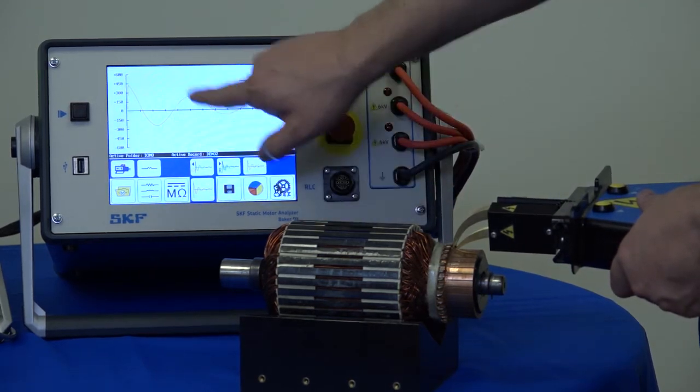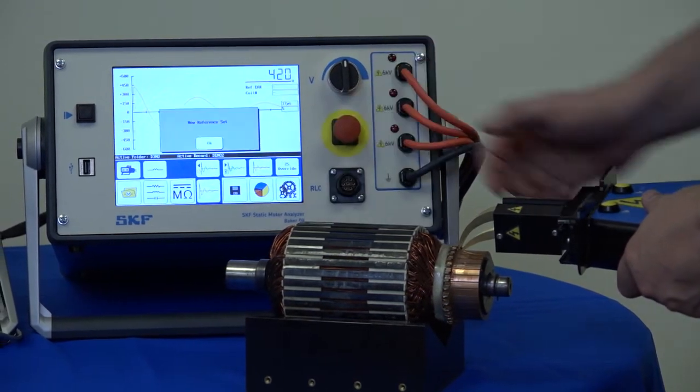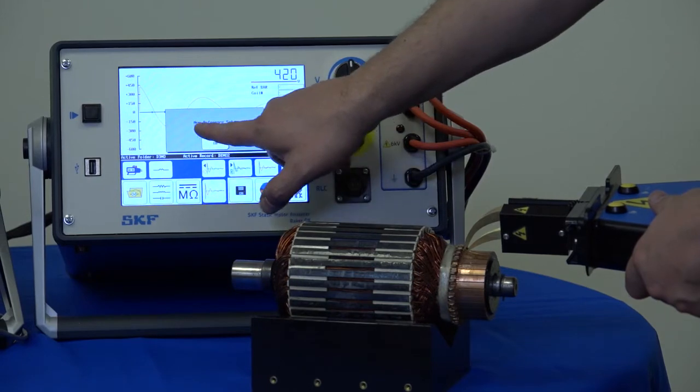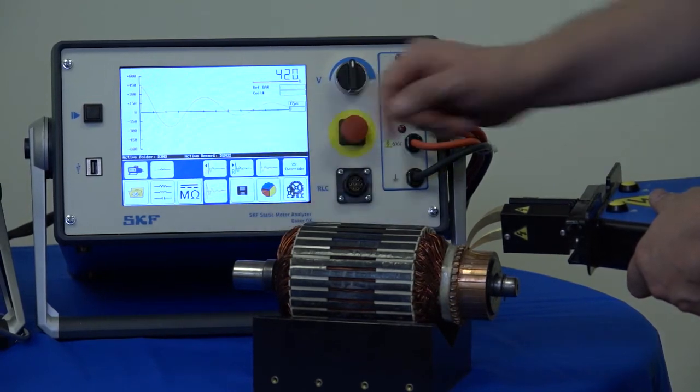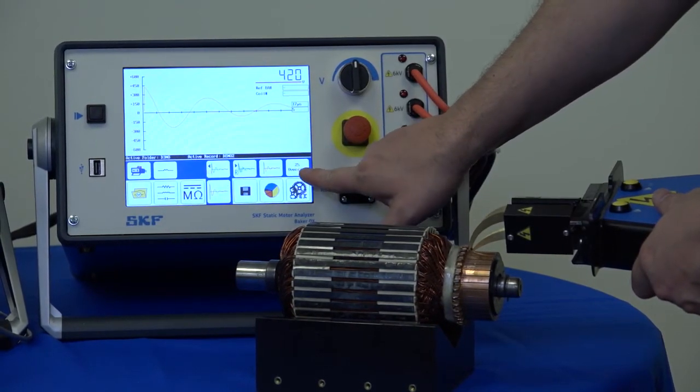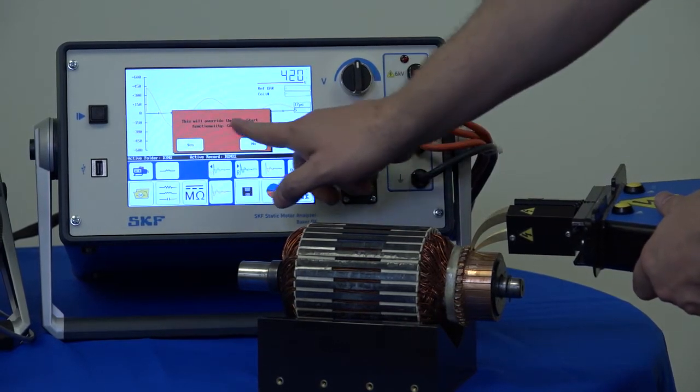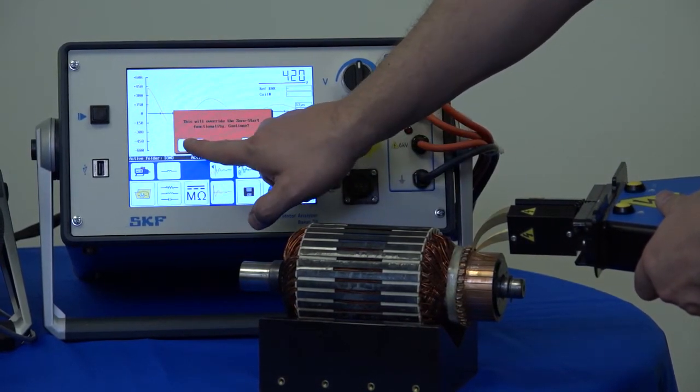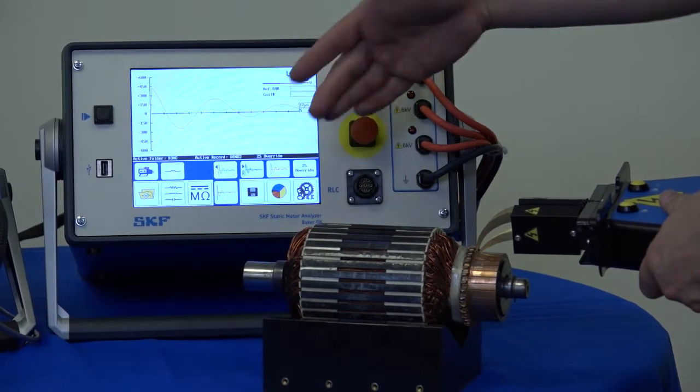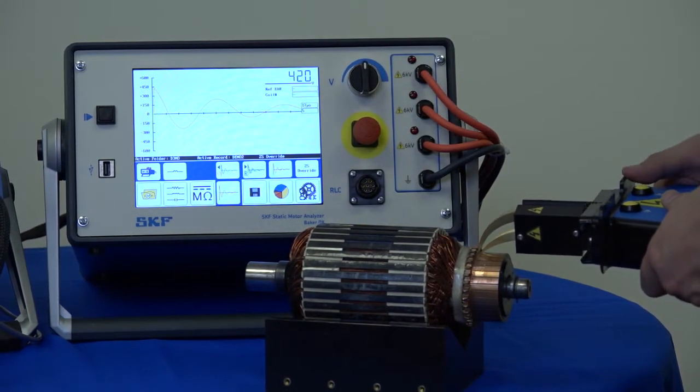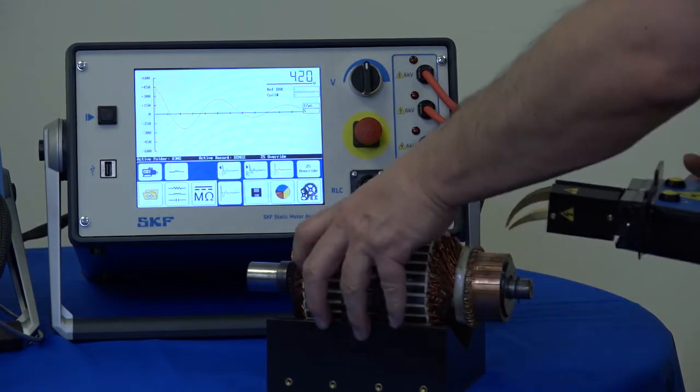And now I want to set that waveform as my reference to compare all other waveforms. It says new reference set, acknowledged. And now I need to select the ZS override, the zero stop override option. Acknowledge the warning that we're going to override that functionality. And that will allow the voltage to go right back up to the test voltage as I push the button.